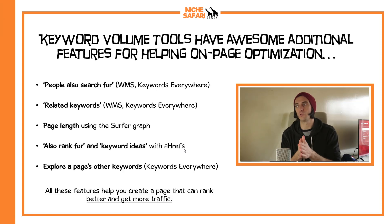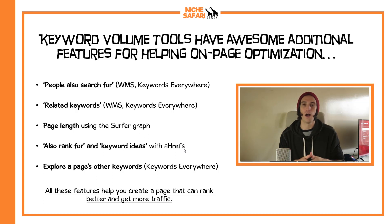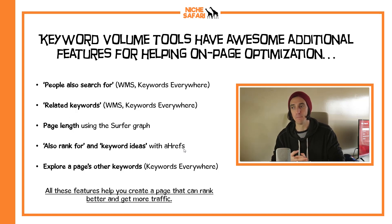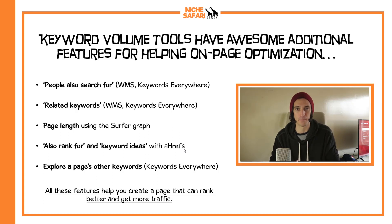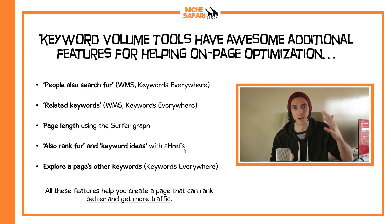This next point is that the keyword volume tools do have awesome additional features. So even if you have no faith in the search volume metric of these tools, it is still worth using them because they give you things like the people also search for box — WMS and Keywords Everywhere have a really good one for that. Related keywords: again WMS and Keywords Everywhere have good ones. Surfer generates a graph that tells you the page length of each of the pages on the front page of the SERPs, so you know how long you should write your articles to be around about the same as your competitors.